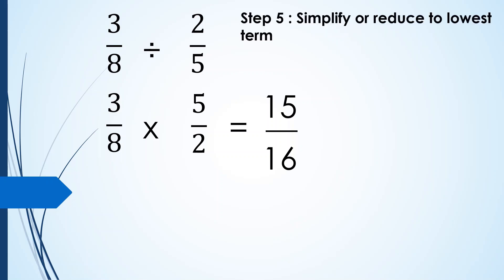And then finally, for step 5, we have to simplify or reduce to lowest term or express our answer to lowest term. And if the answer is an improper fraction, we have to convert it to mixed number. In this particular example, 15 over 16, proper fraction na siya at it is already in the lowest term. So, the final answer is 15 over 16.